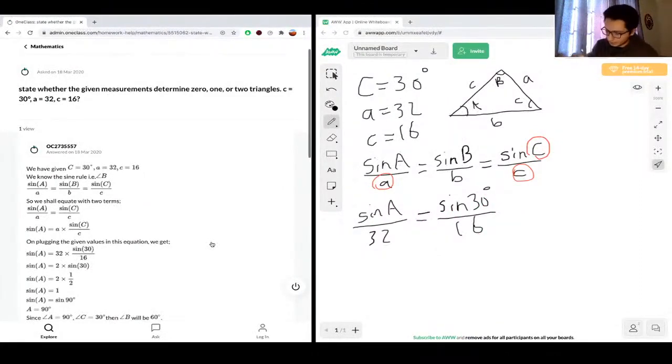Okay, solving for this, we get sine A equals, so if we multiply both sides by 32, we would get sine A on the left side, and then we get 32 over 16, 32 over 16 times sine 30. So we know 32 over 16 is just 2. And sine 30, if we plug that in our calculator, we get a half.